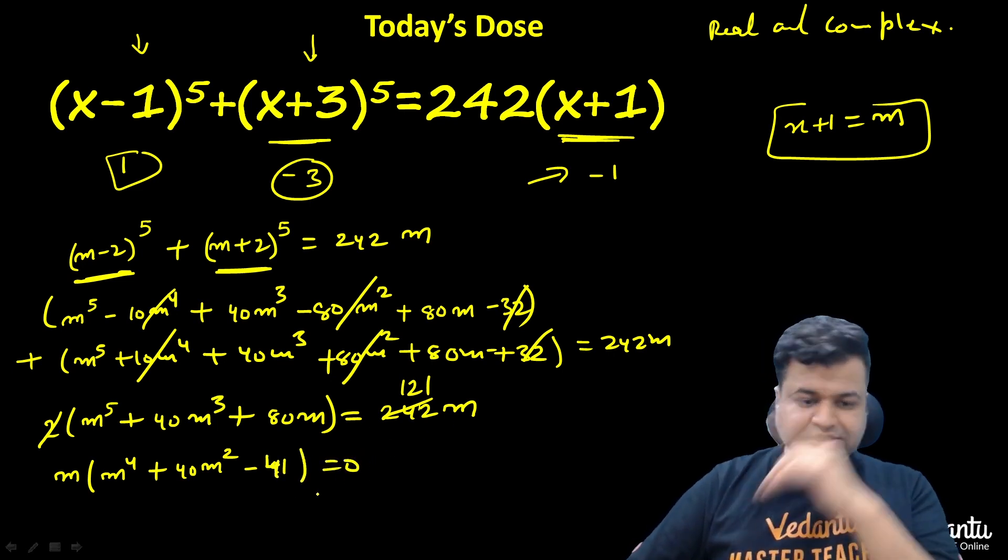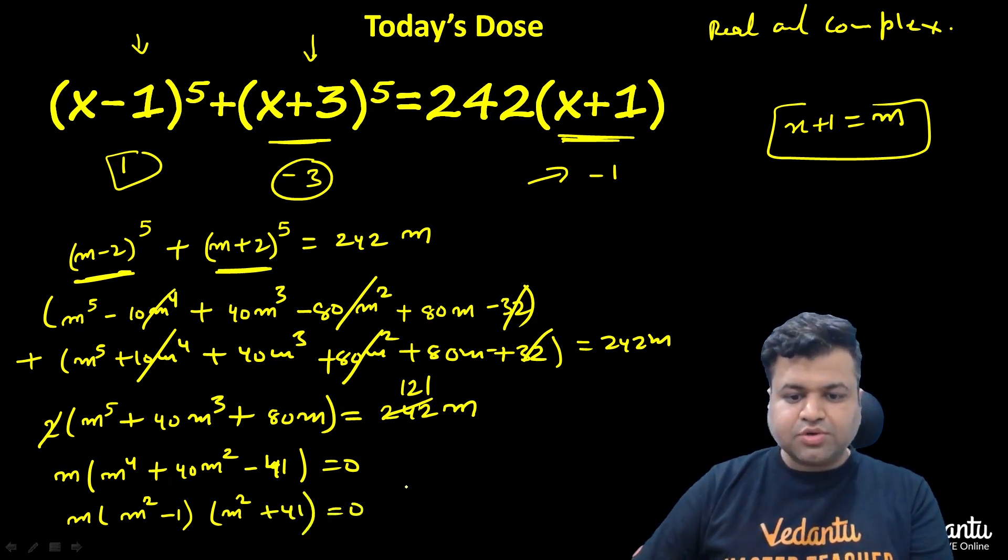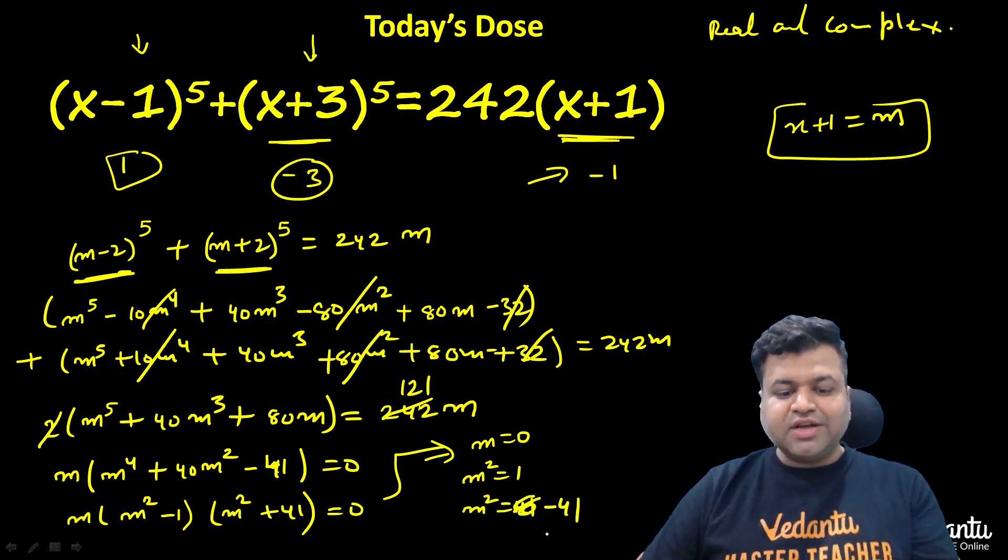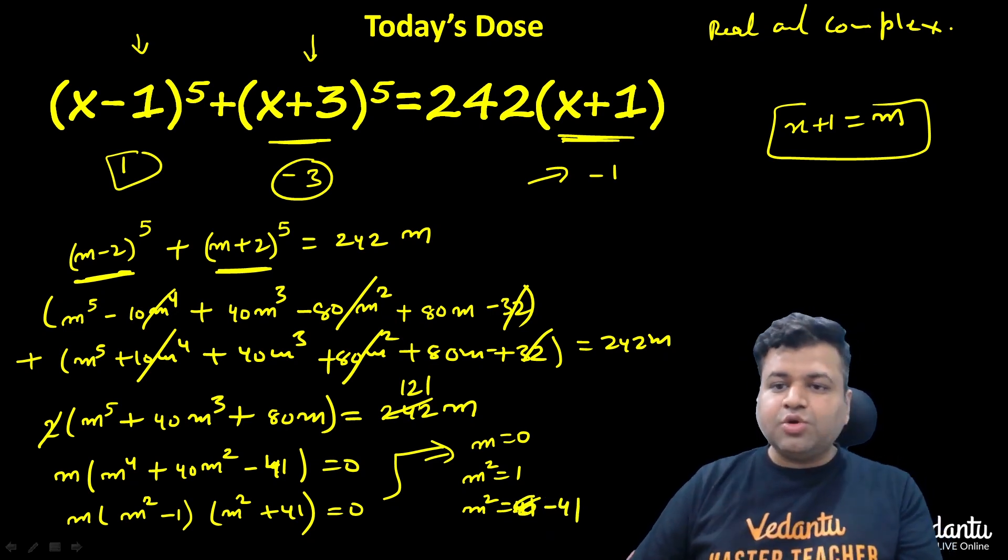Here we can further factorize it. This becomes m times (m^2 + 1)(m^2 - 1) times (m^2 + 41). Wait, let me reconsider. This becomes m times (m^2 - 1) times (m^2 + 41) equals 0. From this we can conclude either m equals 0, or m^2 equals 1, or m^2 equals minus 41. These are the three conclusions we can make.